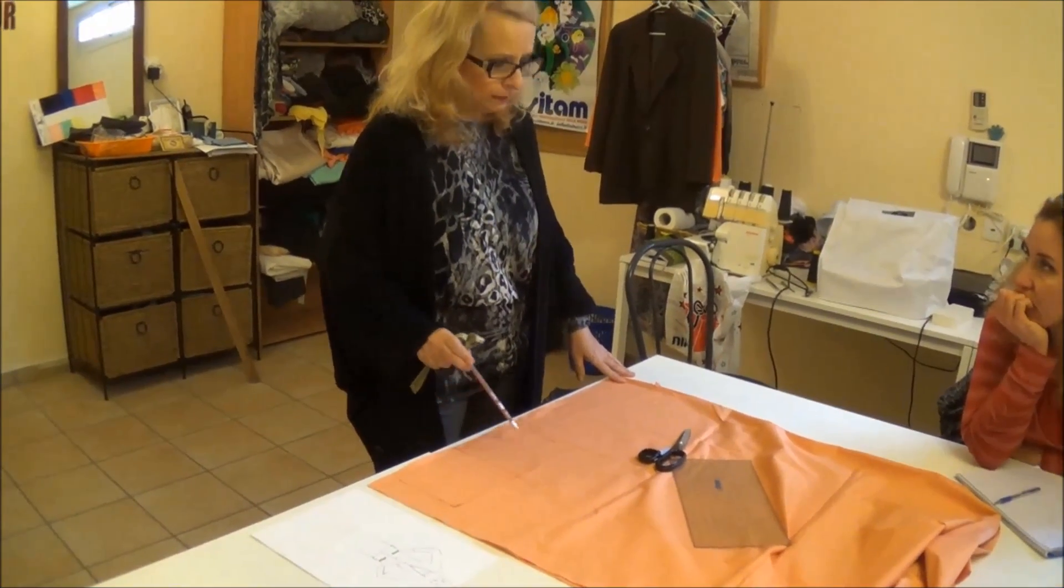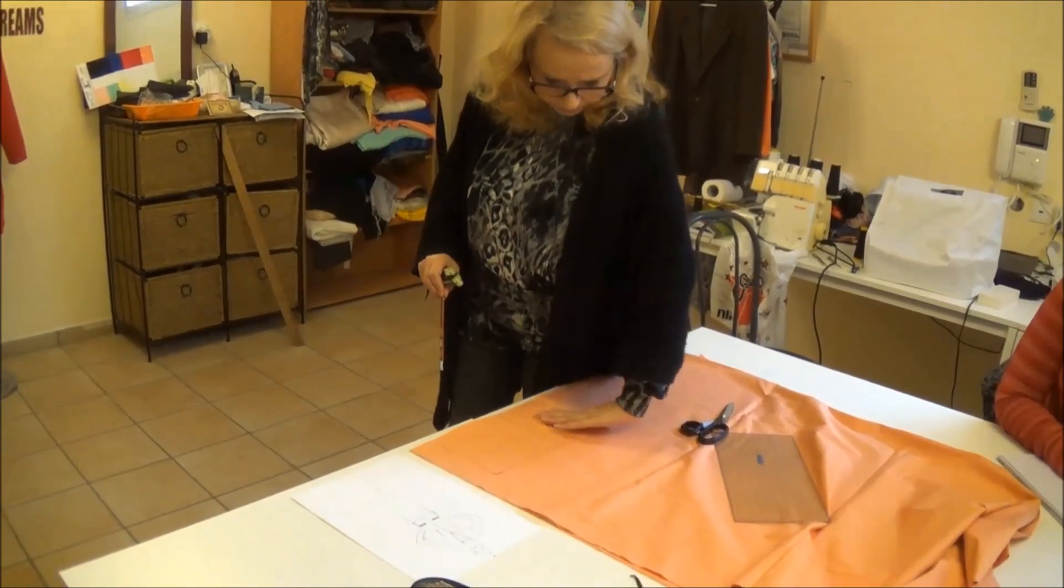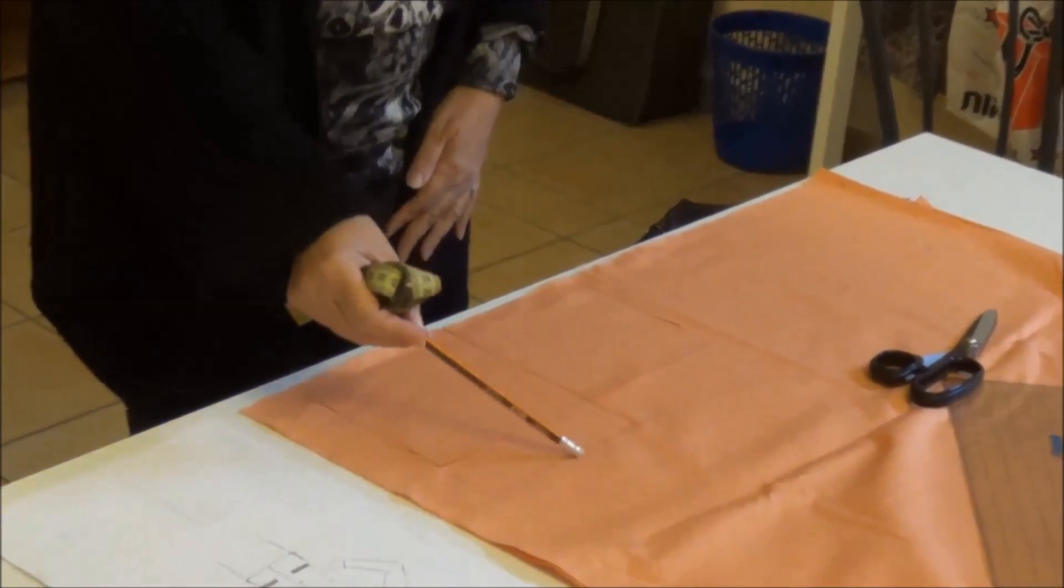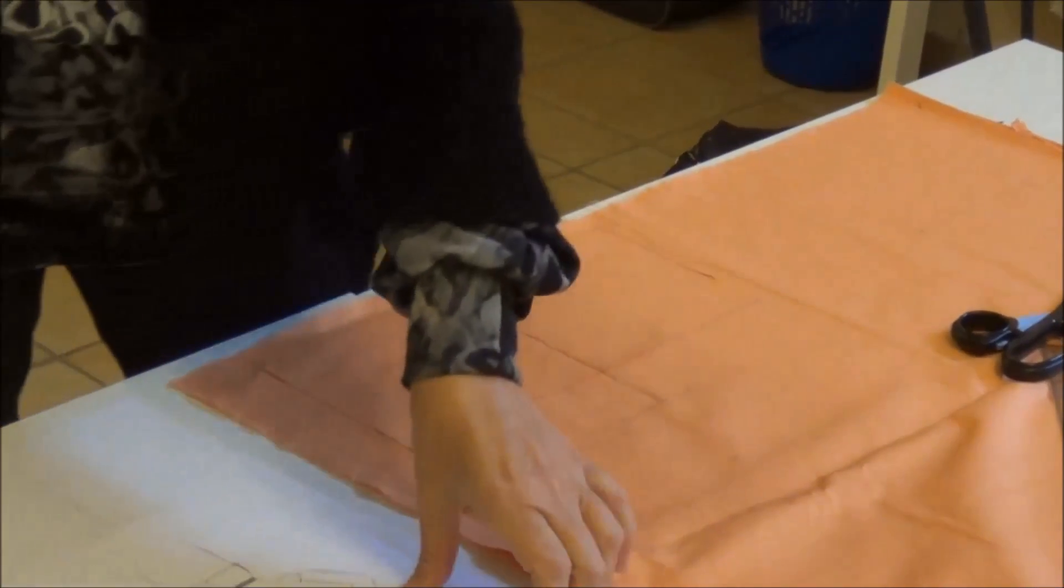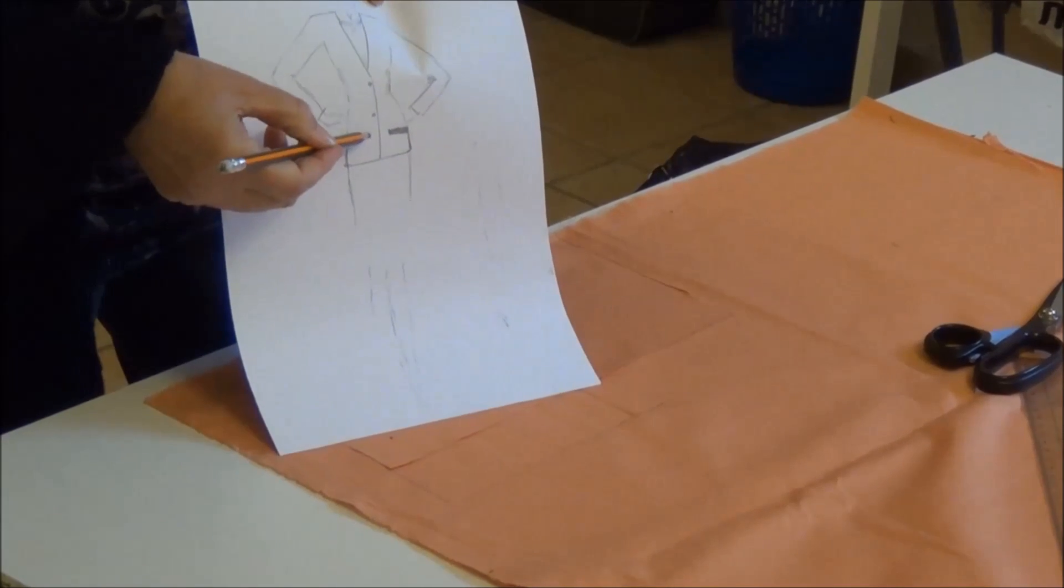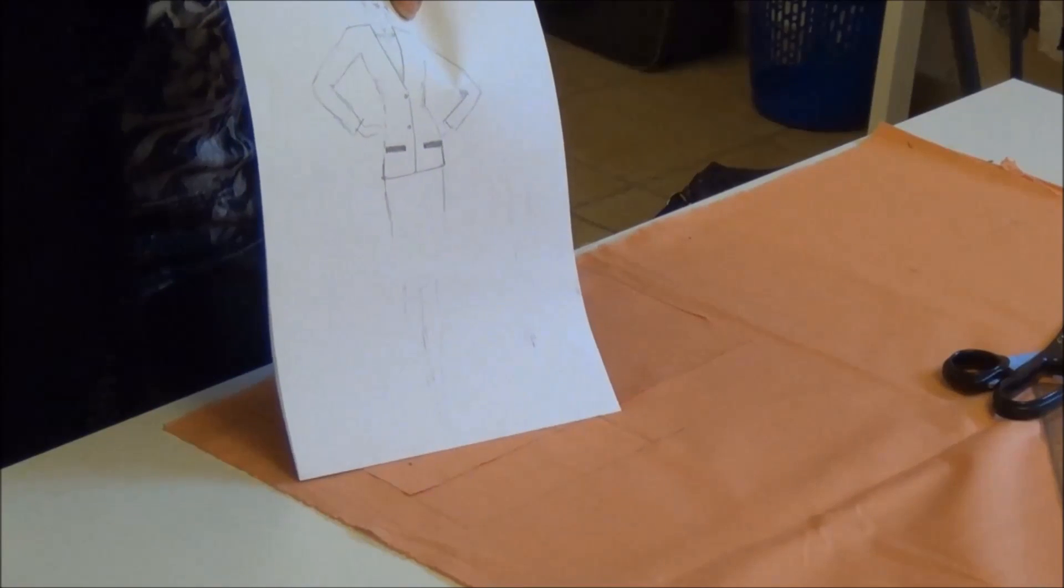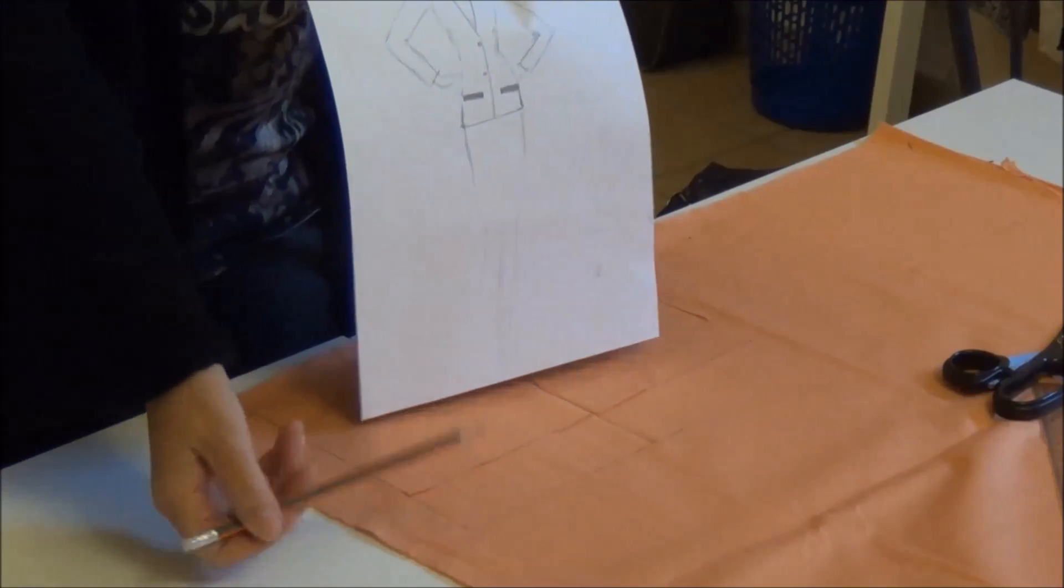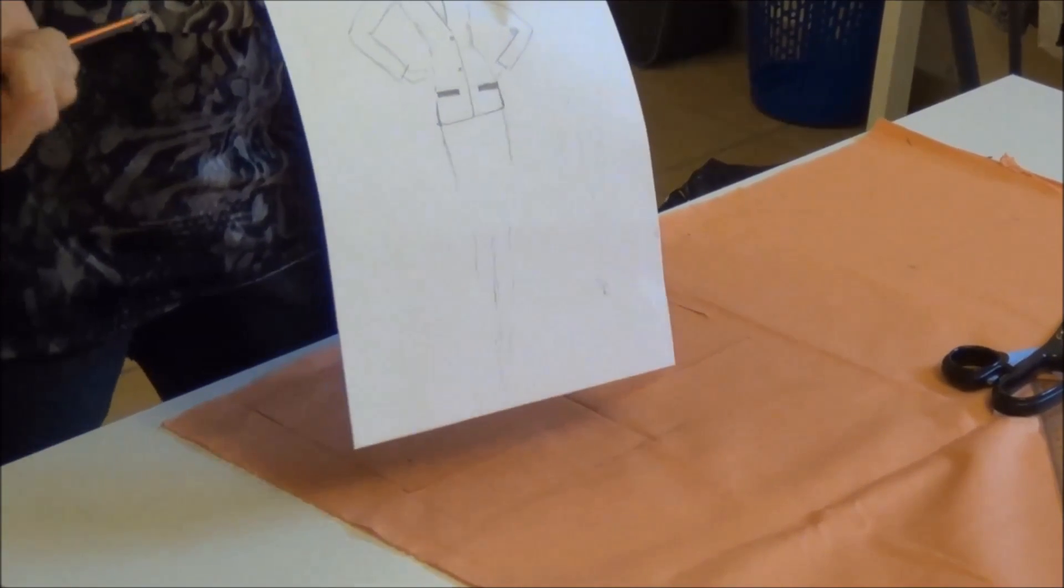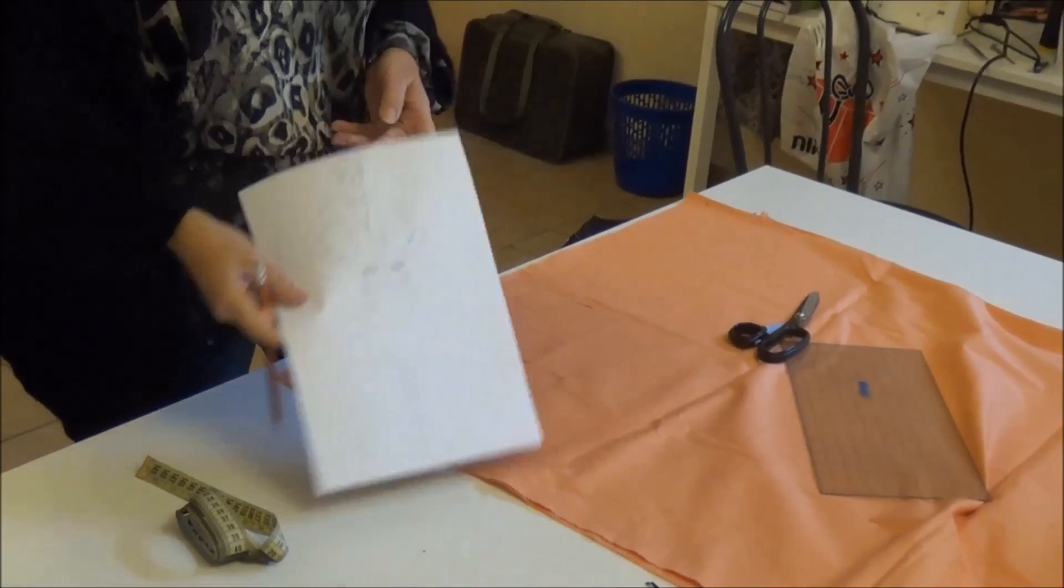Per iniziare disegnerò due quadrati di 15 cm x 15 cm più 1 cm intorno per la cuscitura e poi anche due listini che praticamente avranno la stessa larghezza della tasca interna. Questi sono i listini disegnati in eretto. La loro larghezza sarà di 15 cm più 2 cm, 1 cm per lato per la cuscitura, moltiplicato per 2.